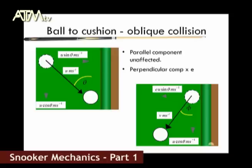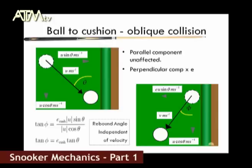As the E value between ball and cushion is below 1, our rebound angle φ will always be less than our initial angle θ. If we look at the diagram geometrically, φ is equal to EU sin θ divided by EU cos θ. As we can see, the U cancels out, which means that our rebound angle is totally independent of our initial velocity.